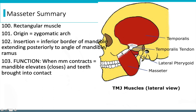Its origin is on the zygomatic arch. The insertion is on the inferior border of the mandible, and it runs posteriorly along the angle of the ramus. So it's really more like a rounded rectangle because of that insertion that runs along the angle of the ramus. But on the test, just know that it's shaped like a rectangle.